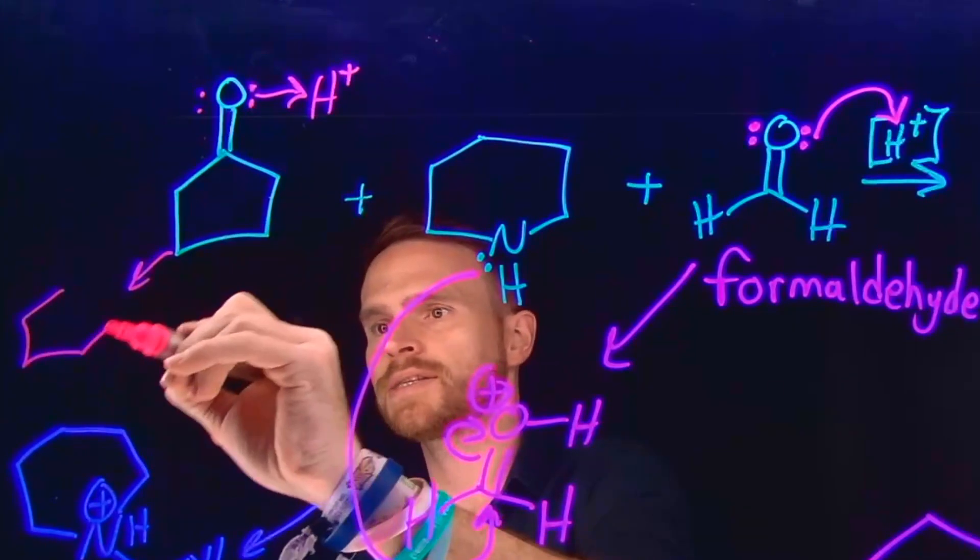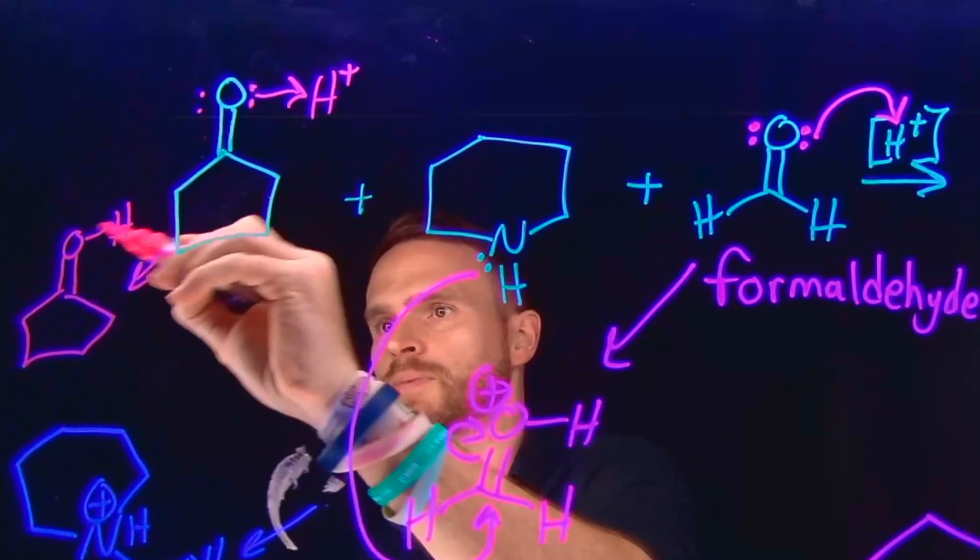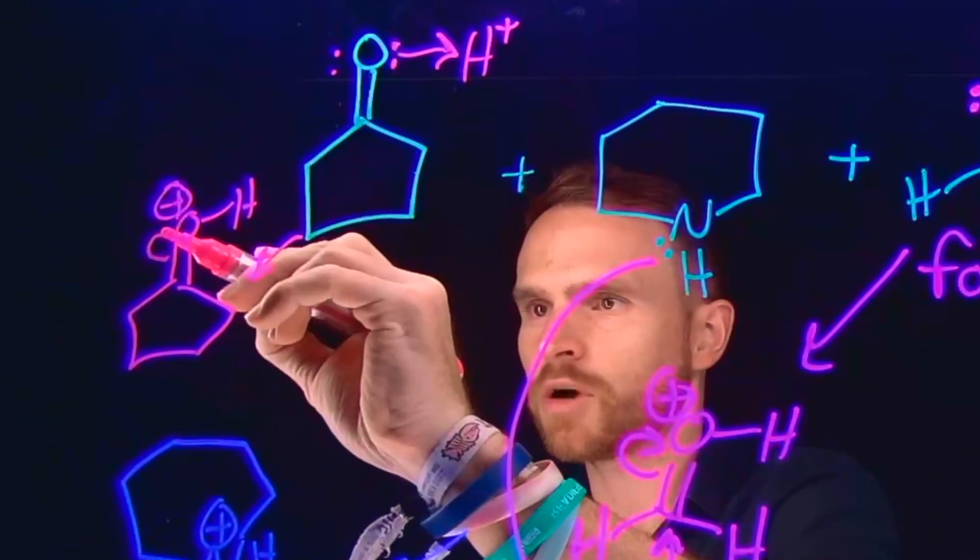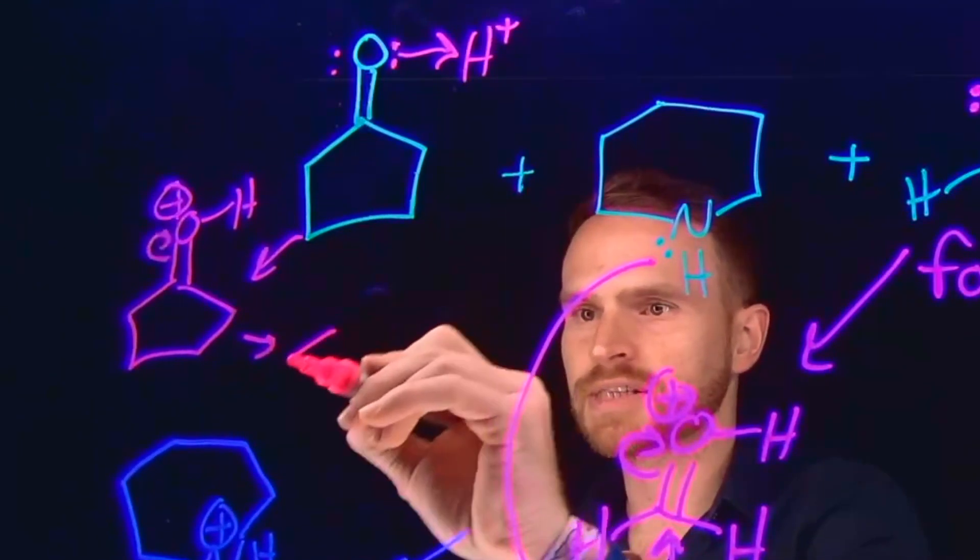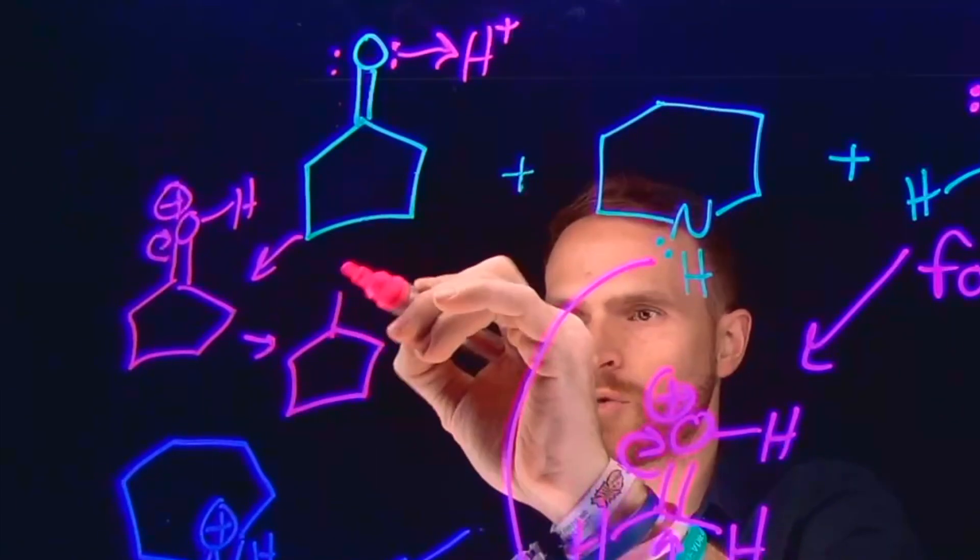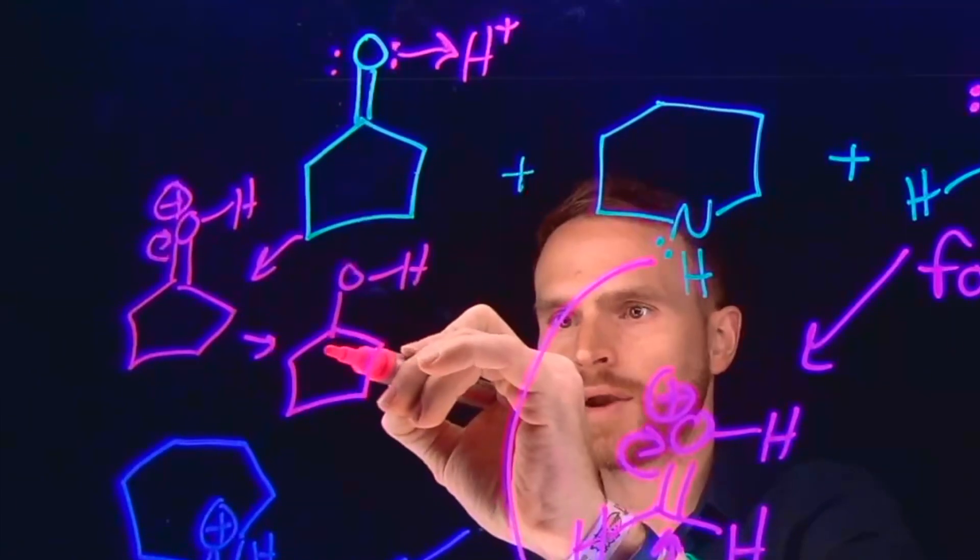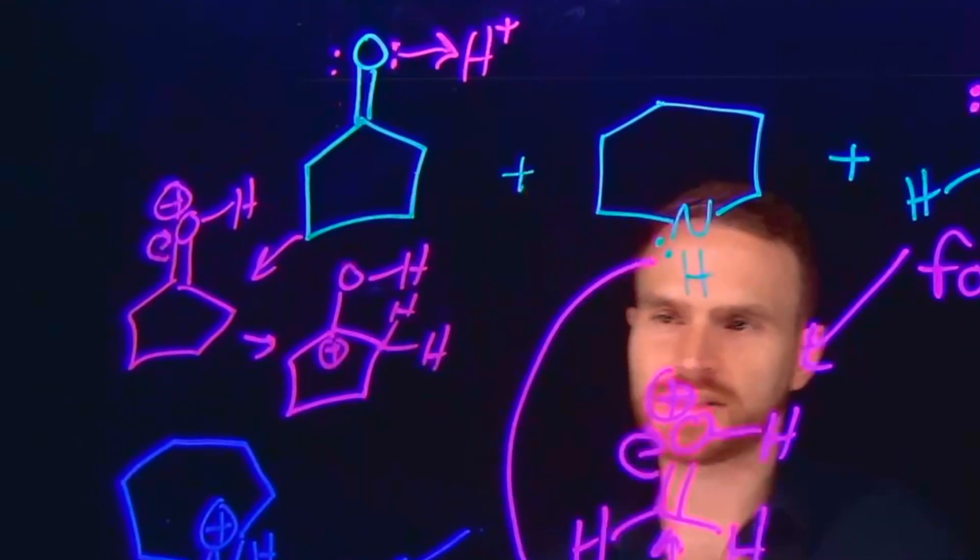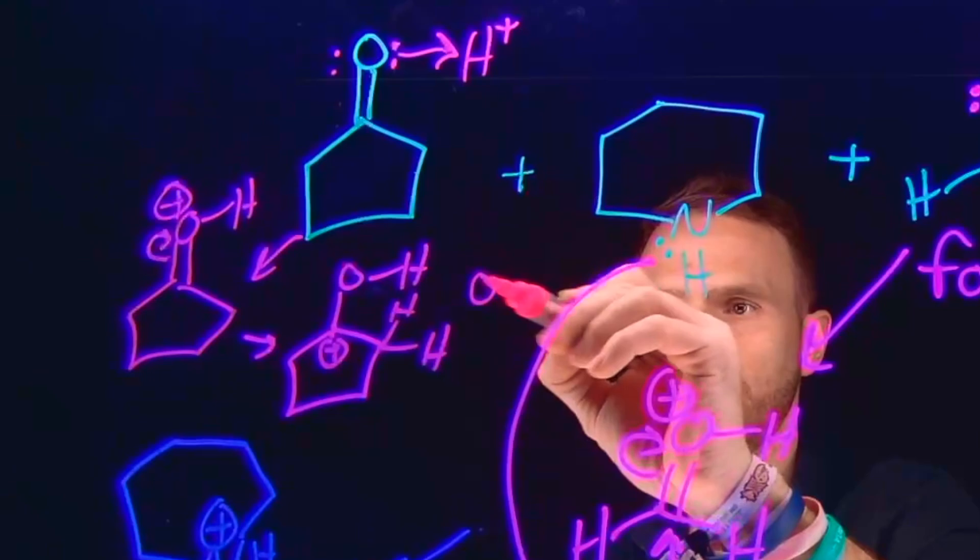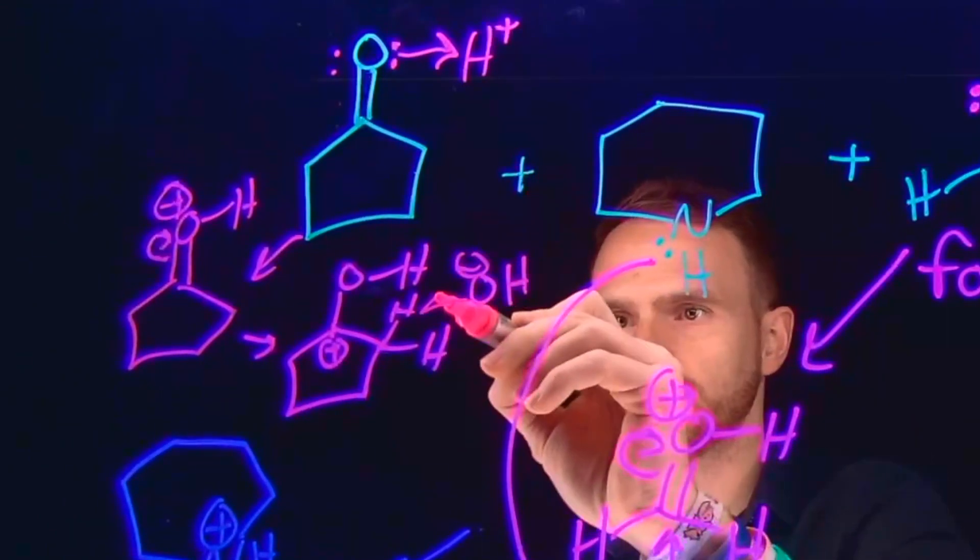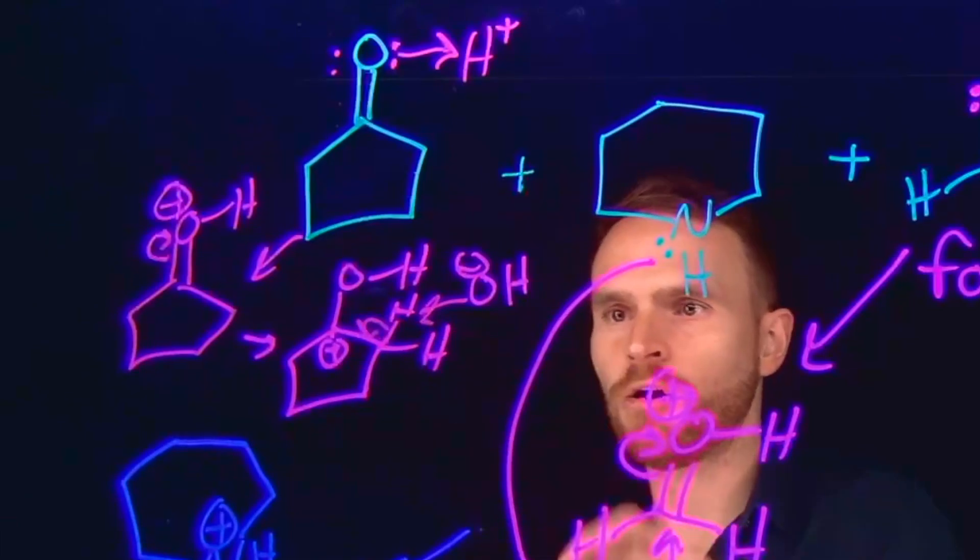What can happen is these pi electrons can come up giving us a positively charged carbon species. Or you can think of this as like another resonance structure, for example, where now the positive charge is here. And what can happen is these hydrogens can come and be deprotonated by whatever the conjugate base is formed. Let's just say it was OH minus and you can form an enol at this position.